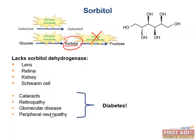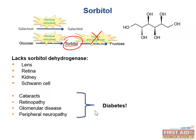Does this sound familiar? It should sound like diabetes. You may also see peripheral neuropathy, and all of these are common symptoms of diabetes. Similarly, galactosemia can also result in conversion to the osmotically active alcohol form, galactitol, via aldose reductase.